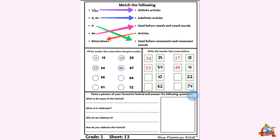In this matching question, we have to match the proper articles. 'The' is a definite article. 'A' and 'an' are indefinite articles. We will match them accordingly — 'the' with definite article, and 'a' and 'an' with indefinite article.